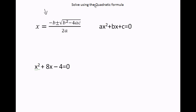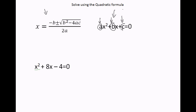In order to use the quadratic formula, you have to have your quadratic equation in standard form. The number in front of the x squared is considered a, the number in front of the x is b, and the number without an x is c.